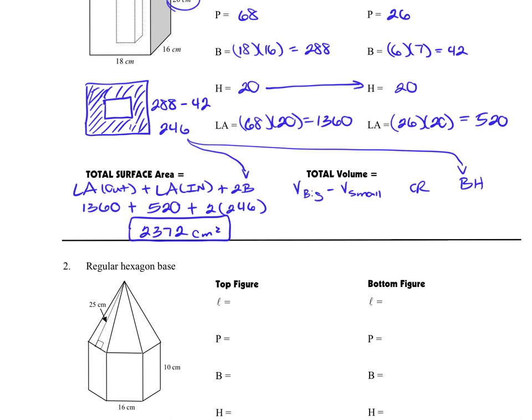The volume of the big prism would be its base, 288 times the height of 20. And the volume of the small prism that we're going to take out would be its base of 42 times 20. And mathematically, if we work this out, we will get 4,920 centimeters cubed. If we did it this other way that some students like, because it's simpler, is the 246 times the height of 20. Either way, you will get 4,920 centimeters cubed. It does not matter which method you choose. Choose the one that's going to make the most sense to you.